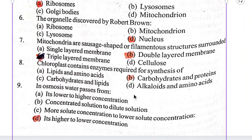Mitochondria are sausage-shaped or filamentous structures surrounded by B. Double-layered membrane. Chloroplast contains enzymes required for synthesis of B. Carbohydrates and proteins.